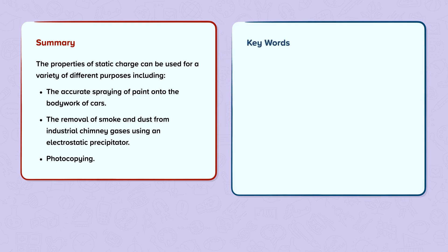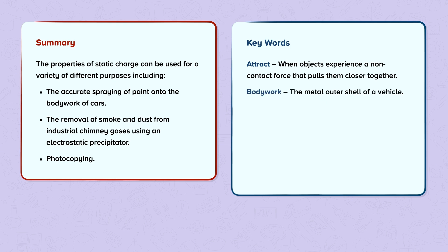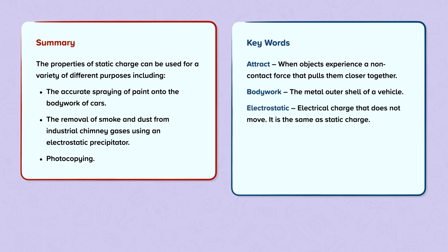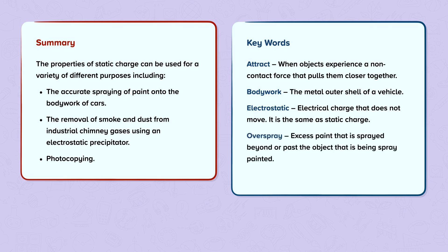Keywords: Attract — when objects experience a non-contact force that pulls them closer together. Bodywork — the metal outer shell of a vehicle. Electrostatic — electrical charge that does not move; it is the same as static charge. Overspray — excess paint that is sprayed beyond or past the object that is being spray-painted. Toner — ink in the form of a powder.